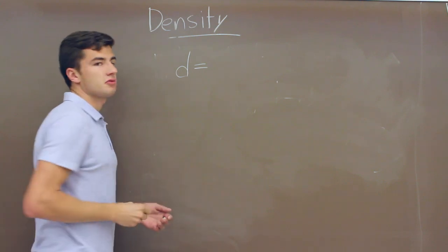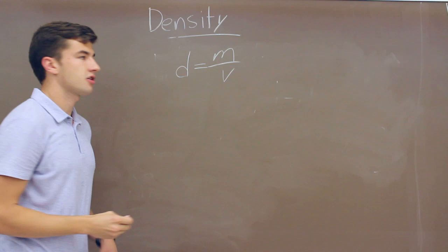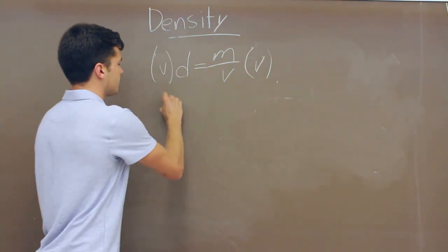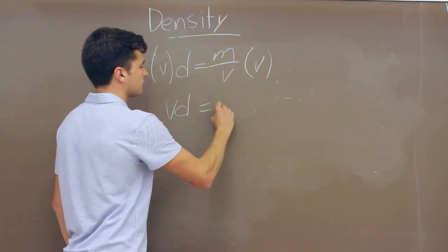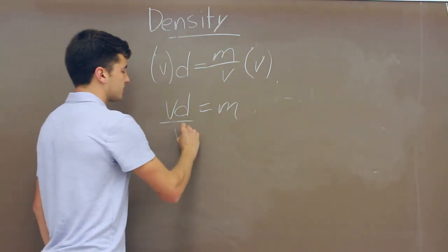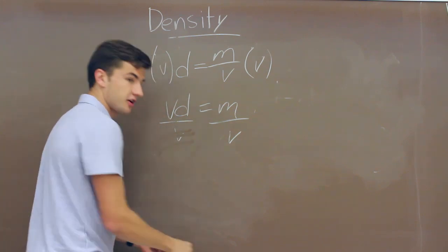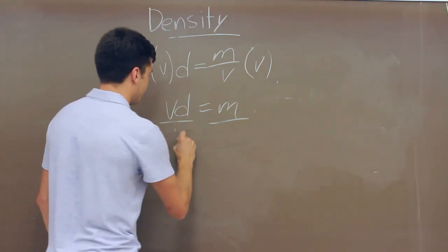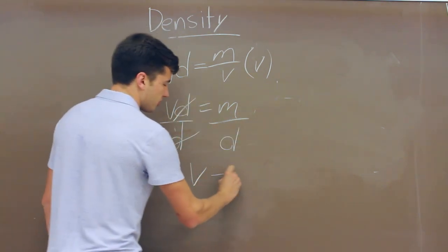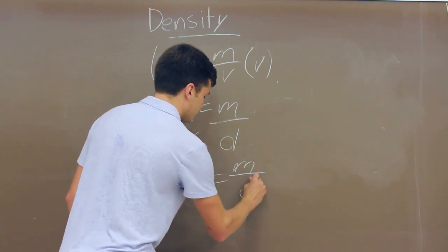We need to rearrange our equation, which starts as density equals mass over volume. We'll start by multiplying both sides by volume, which gives us volume times density equals mass. Then, to get volume by itself, we divide both sides by density. This cancels density on one side and gives us volume equals mass over density.